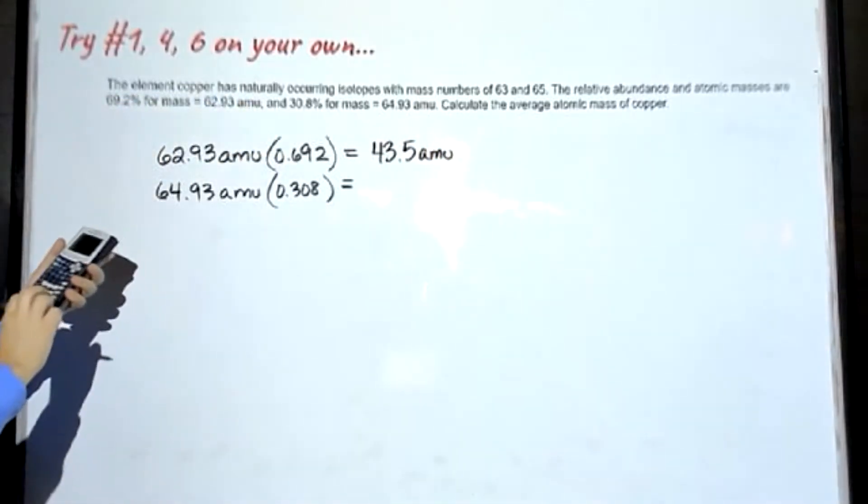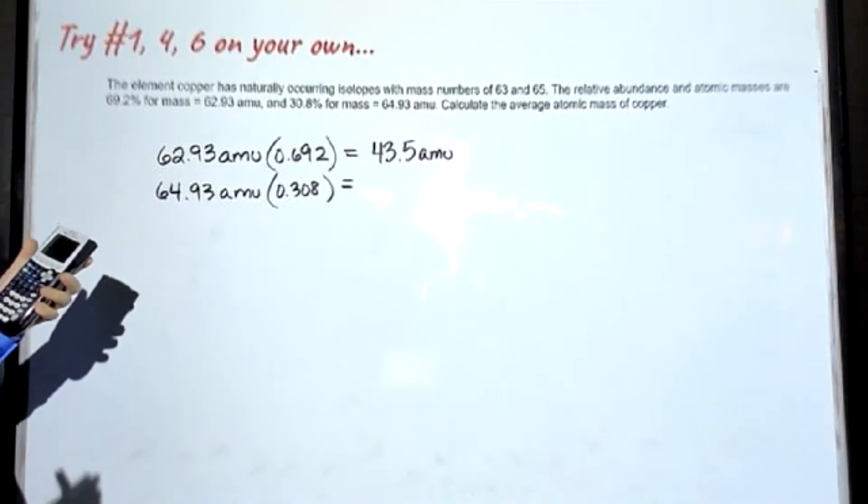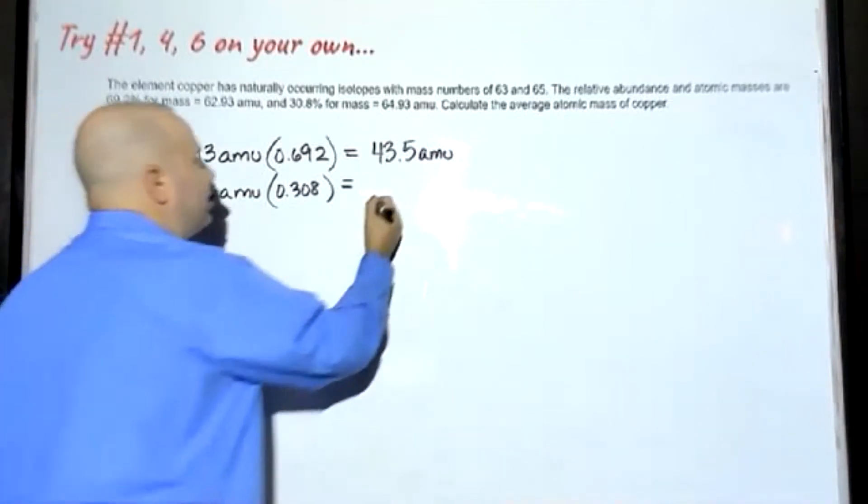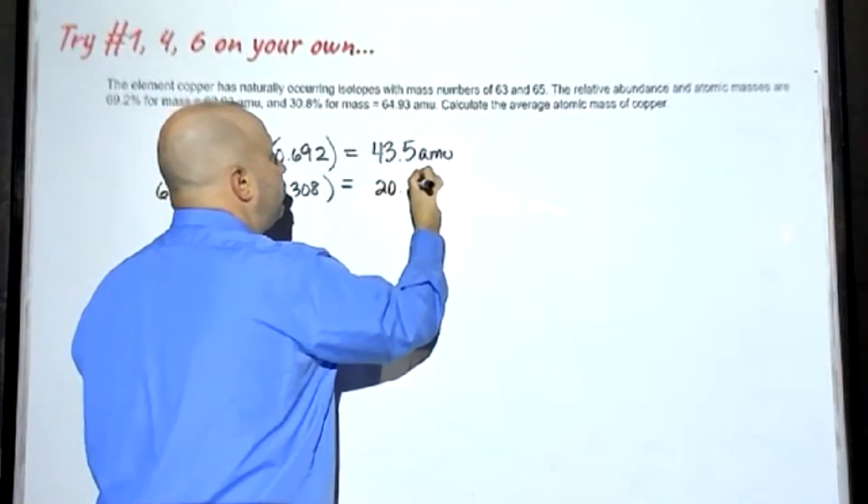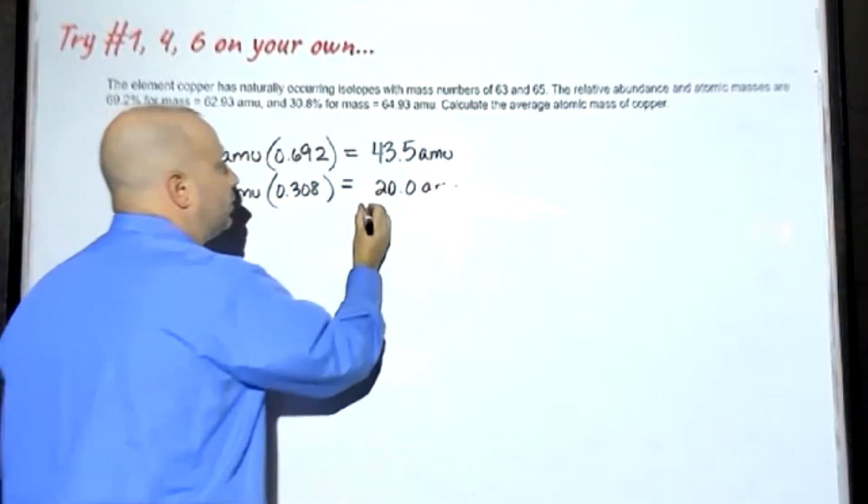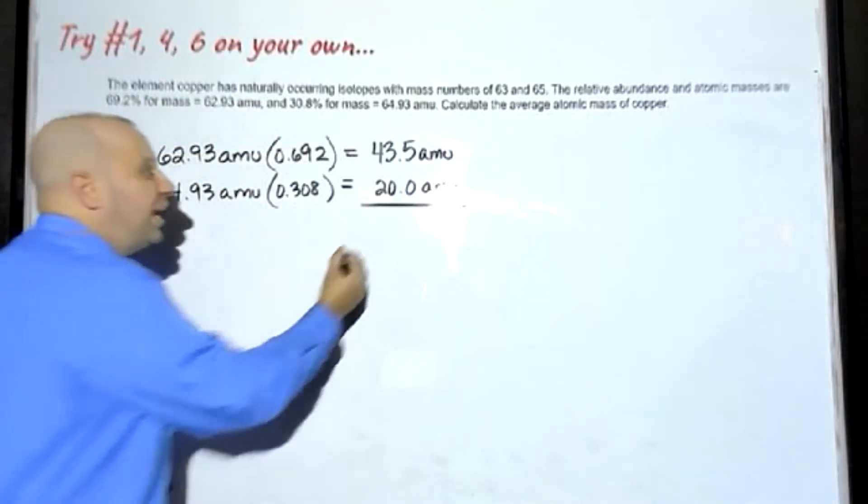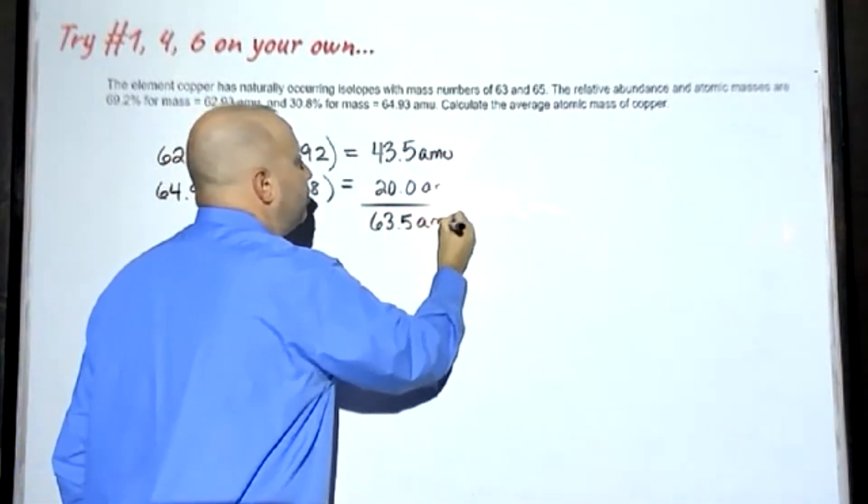Now let's calculate our two numbers here. 62.93 times 0.692 turns out to be 43.5. And for our second example, 64.93 times 0.308 turns out to be 19.998. But when we round it and account for significant figures, this is going to end up being 20.0 AMU. When we add these together, we will get an answer of 63.5 AMU.